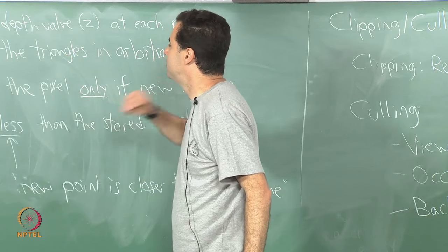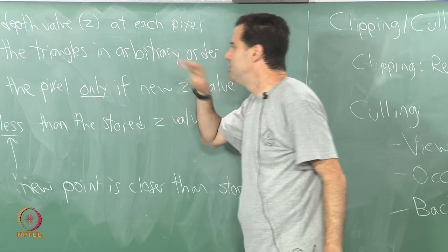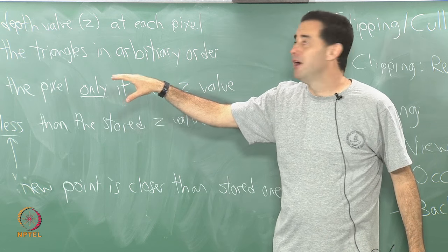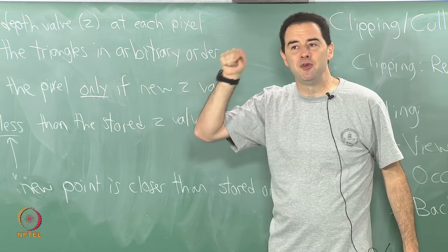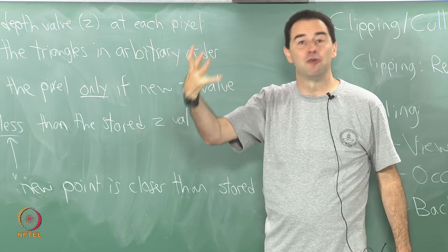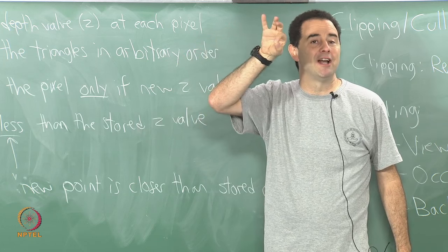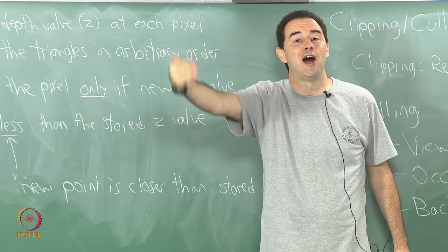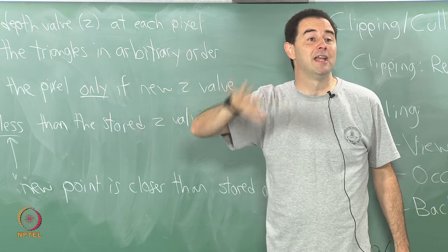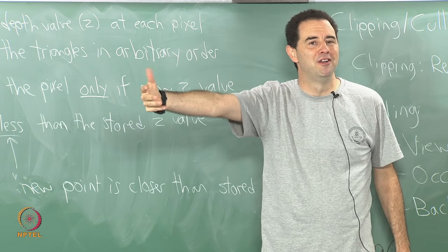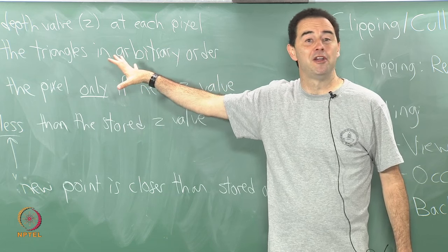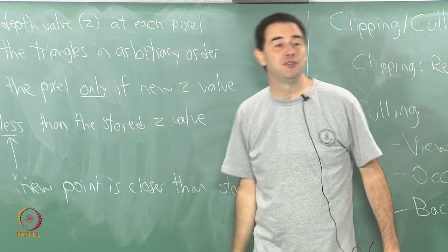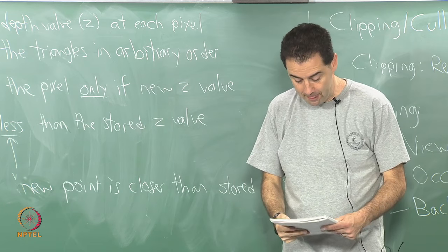One final thing about z-buffers: z-buffers are also very useful for rendering shadows. You can move the viewpoint from the observer to a light source, and then take a look at the ordering of objects with respect to the light source and calculate where shadows will fall. So z-buffers are also useful for calculating shadows — I just wanted to point that out as another benefit of using z-buffers. Any questions?